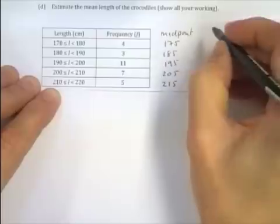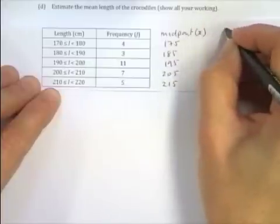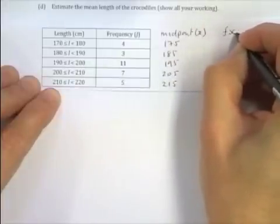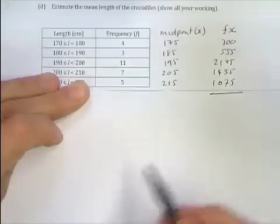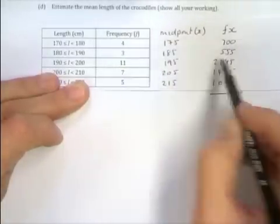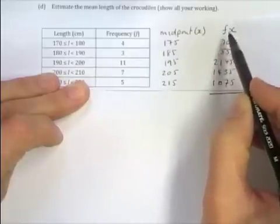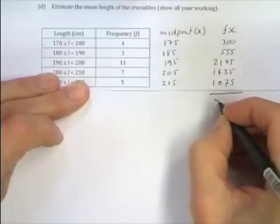So if I do this at the side, I'm going to call it midpoint that I'll call x, and I'm going to do frequency times x. So here it is. I've multiplied 4 times 175 to give 700. I've gone that all the way across to get these for the frequency times the midpoint. If I add those up it gives me the total length of all the crocodiles.